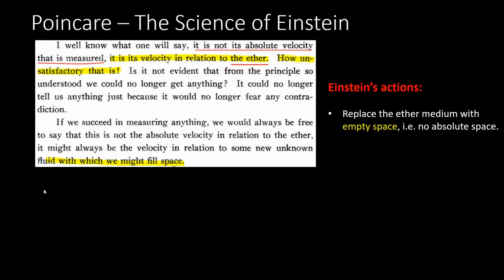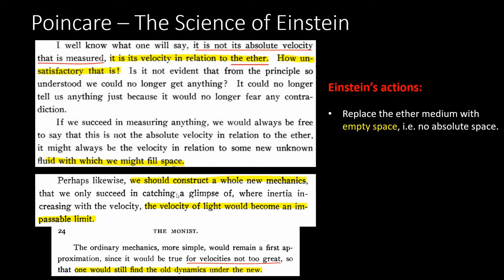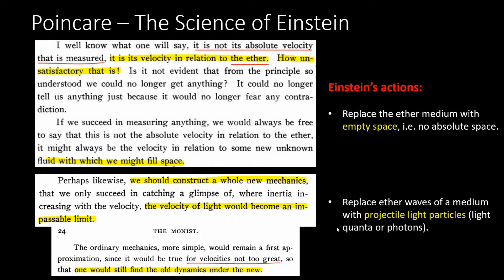Poincaré went on and discussed the idea of the velocity of light becoming an impassable limit. Einstein read this paper — otherwise Poincaré was some kind of prophet that could foretell the future. What Einstein did here was replace the ether waves of the ether medium with projectile light particles, or light quanta — what we now call photons.